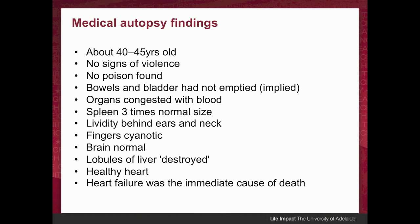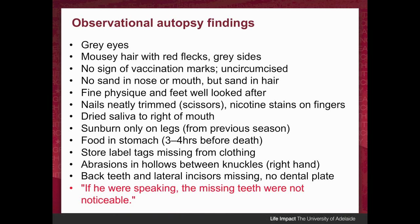These are the key medical autopsy findings. Interestingly, the man's spleen was three times its normal size, so it appears he had some sort of pre-existing illness — you don't get a spleen expanding like that overnight. So there's a pre-existing condition, though other things could have happened to him that night. Interestingly, although he had a healthy heart, heart failure was the immediate cause of death. There are a number of interesting observational autopsy findings which we will go through in detail in a future lecture.